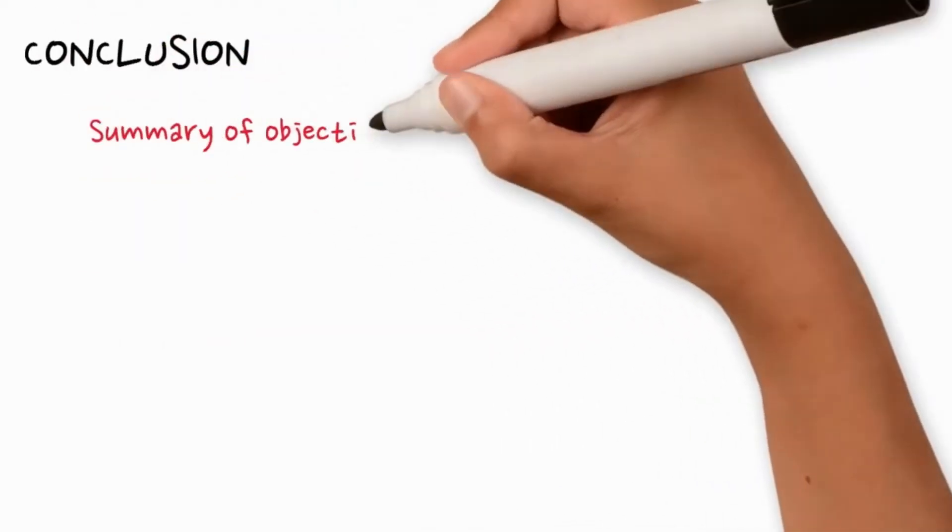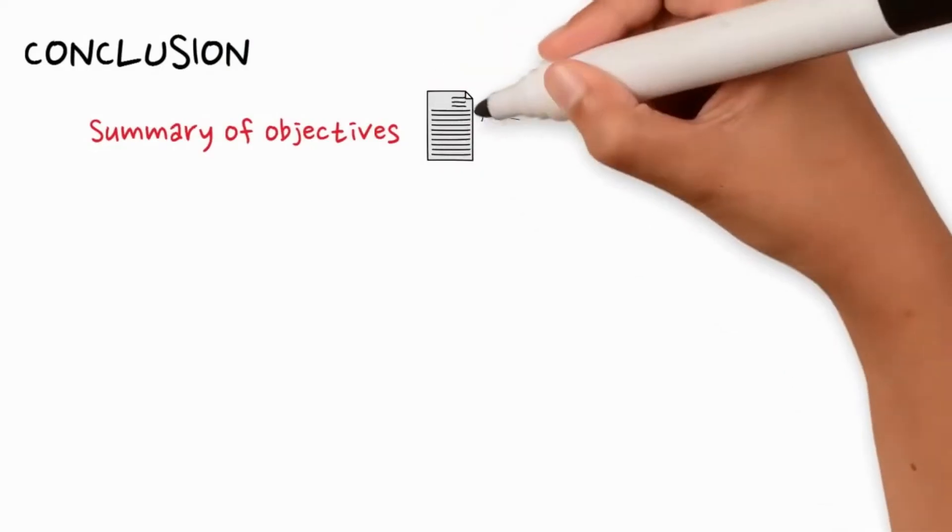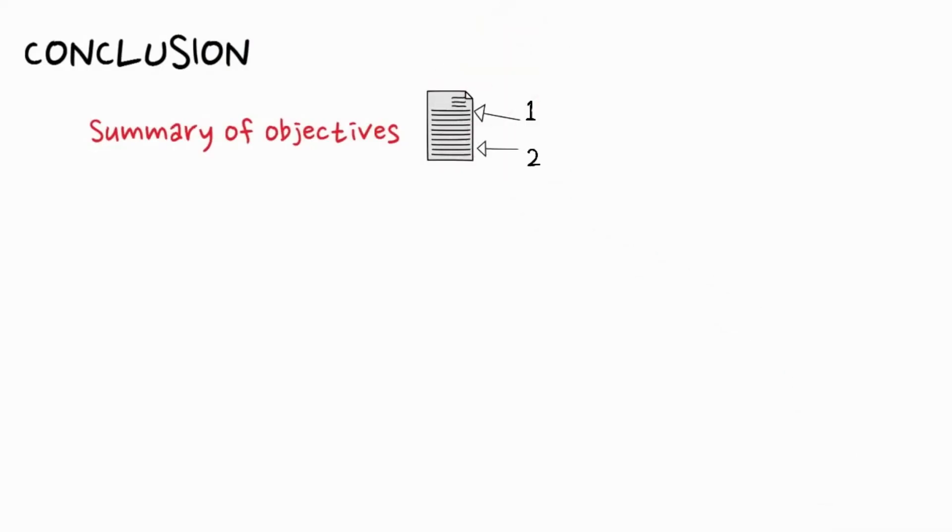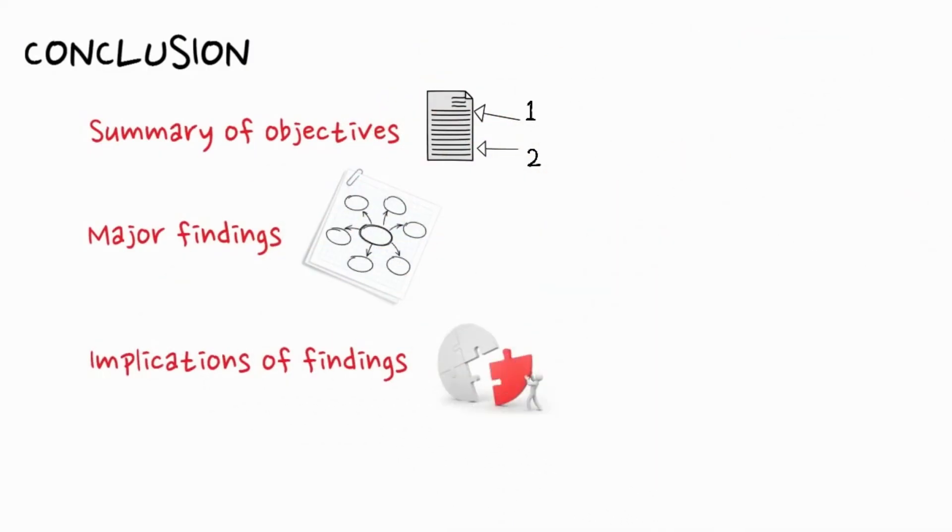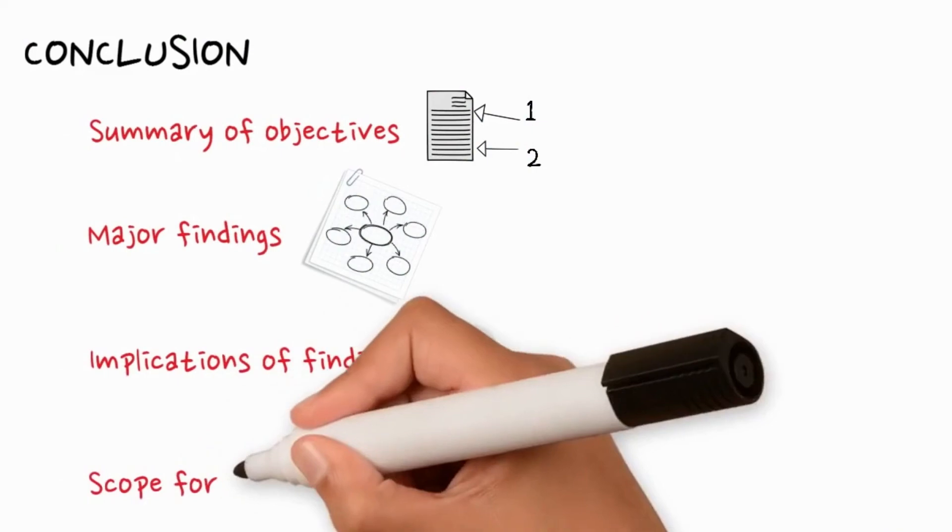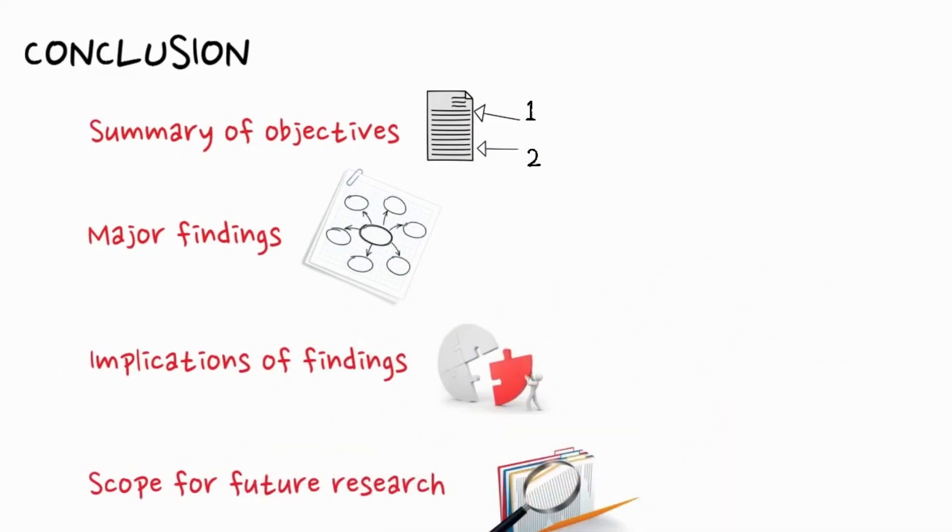And finally, in the conclusion, you must tie it all in together. Sum up the objectives of your paper, list your major findings, share the implications of the study findings, and mention the scope of further research on the same topic.